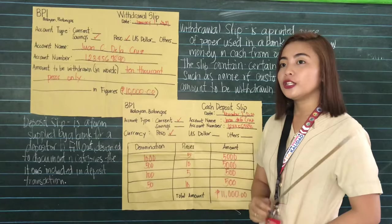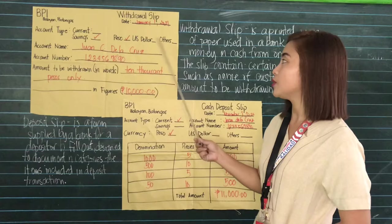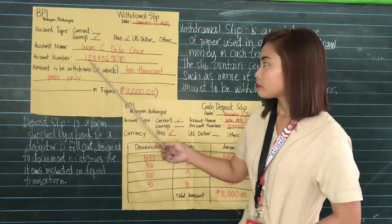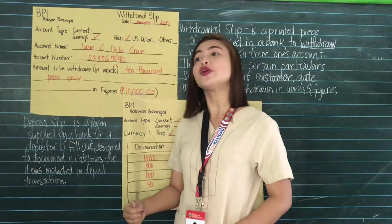You would put the check mark indicating whether the money that you are to withdraw is in peso, US dollar, or other. I put the peso since the money that I'm going to withdraw is in Philippine peso. The account name that you would put here, of course, is the account holder's name or your name.